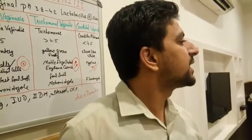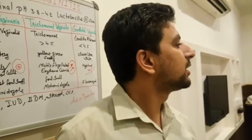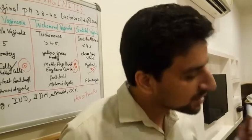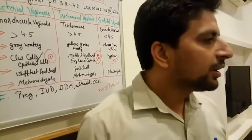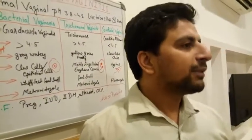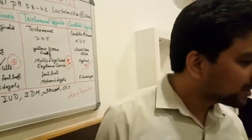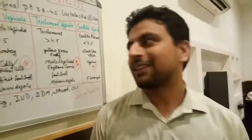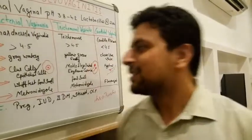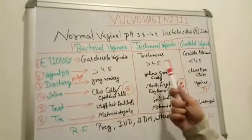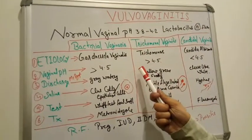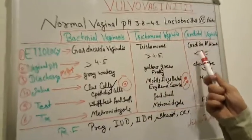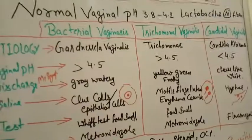Dr. Embele, in bacterial vaginosis how much is the vaginal pH? More than 4.5 — yes, that is correct. In trichomoniasis also the pH is more than 4.5, but in candidal vaginitis the pH is less than 4.5.